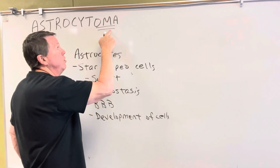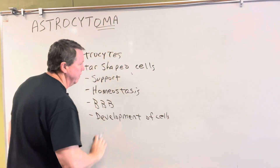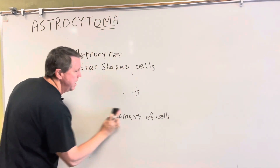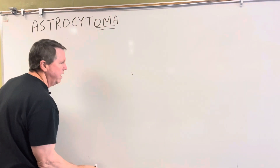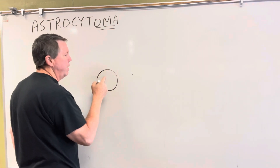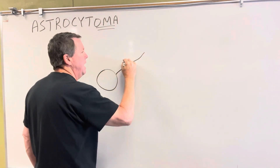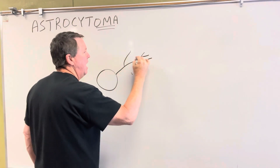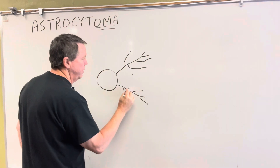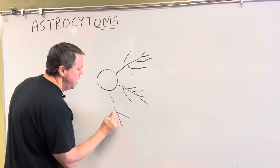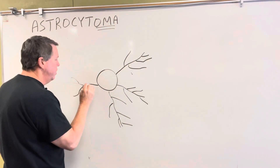As we know, when you see -oma, that means there's going to be a tumor. So an astrocytoma is a tumor of astrocytes. These are star-shaped cells, and I'm going to draw one — this is going to be the body of the astrocyte, or the soma. Then we have these processes that come out from the astrocyte. One astrocyte can actually connect to thousands of neurons.